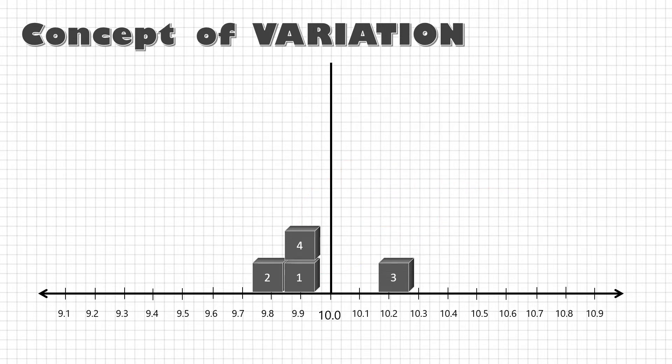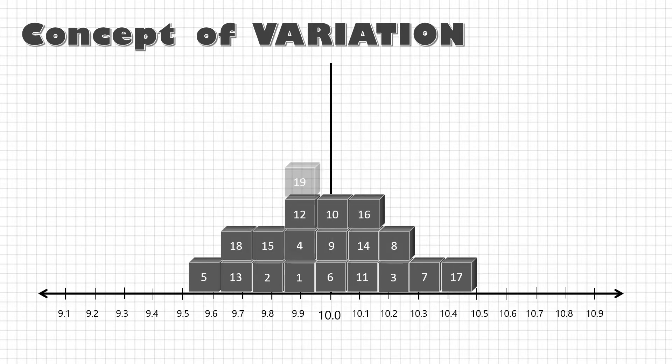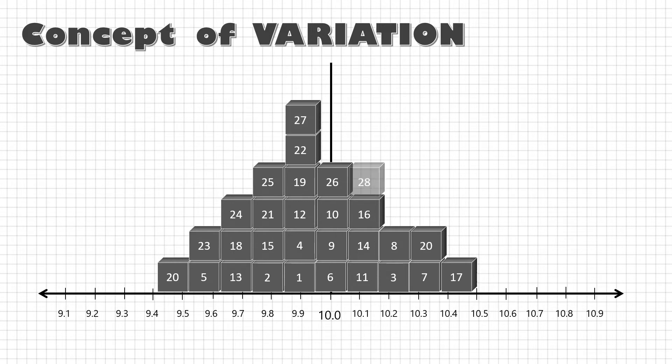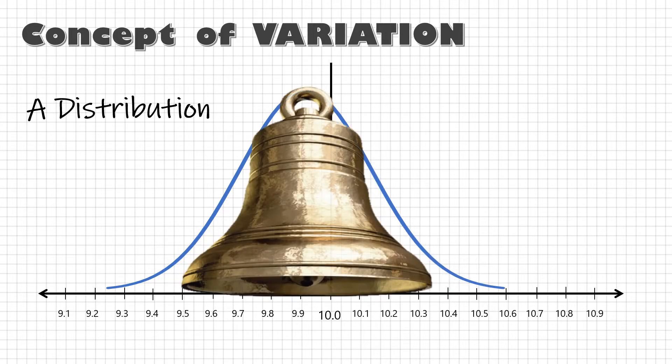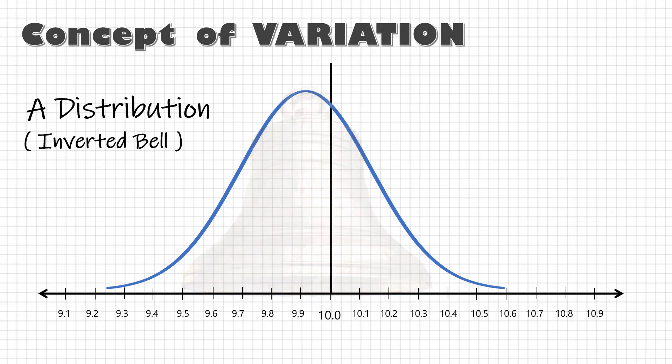So again, let's say fifth part is here, sixth here, and let's say there are a total of 30 parts. Now these parts may vary from each other but they form a pattern that can be described as a distribution. If I make a line through the top of this distribution, it will look like an inverted bell. Now this distribution curve or inverted bell represents a process statistically.